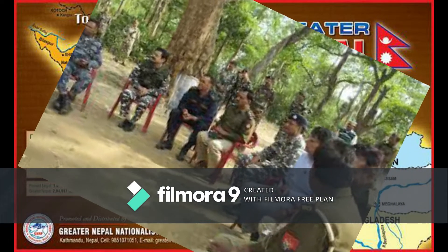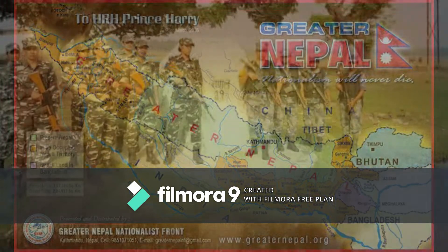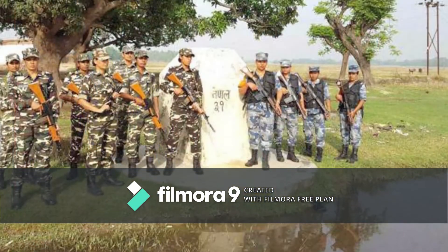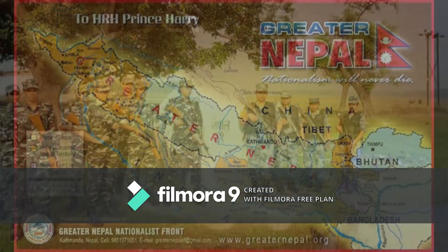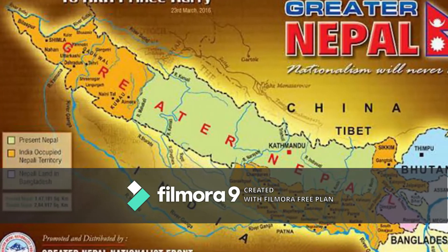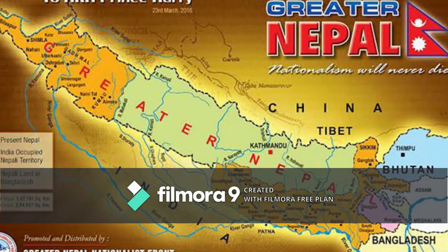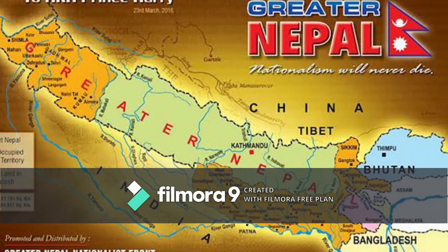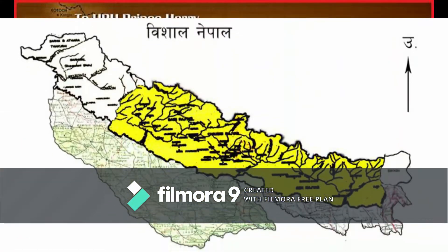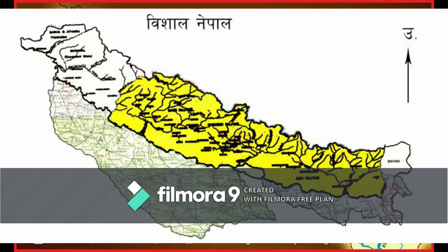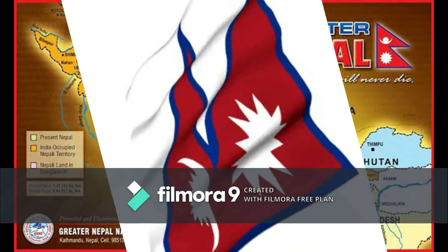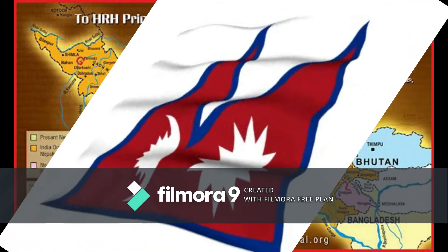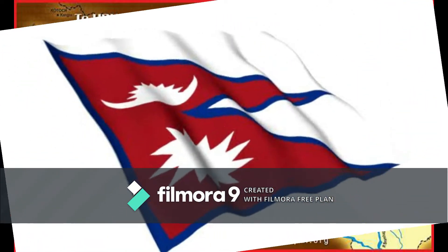Nepal claims that the river to the west of Kalapani is the main Kali river, and hence the area should belong to Nepal. But India claims that the river to the west of Kalapani is not the main Kali river, and therefore the border there should be based on the ridge lines of the mountains of Om Parvat, to the east of the river.